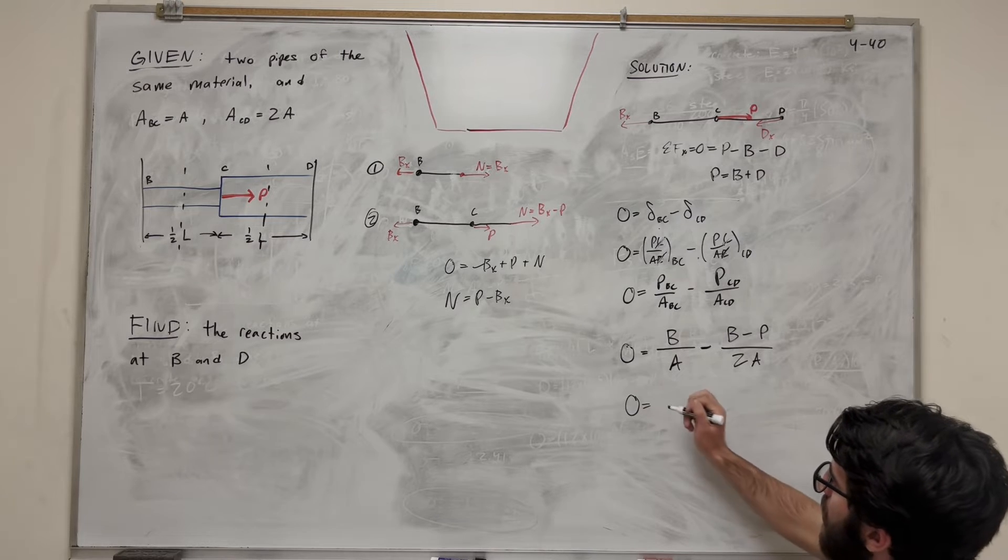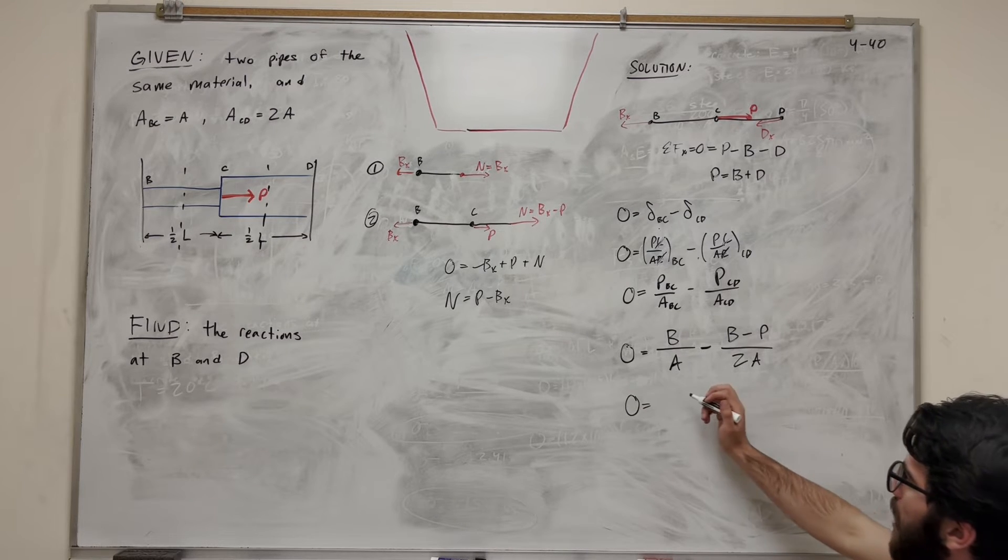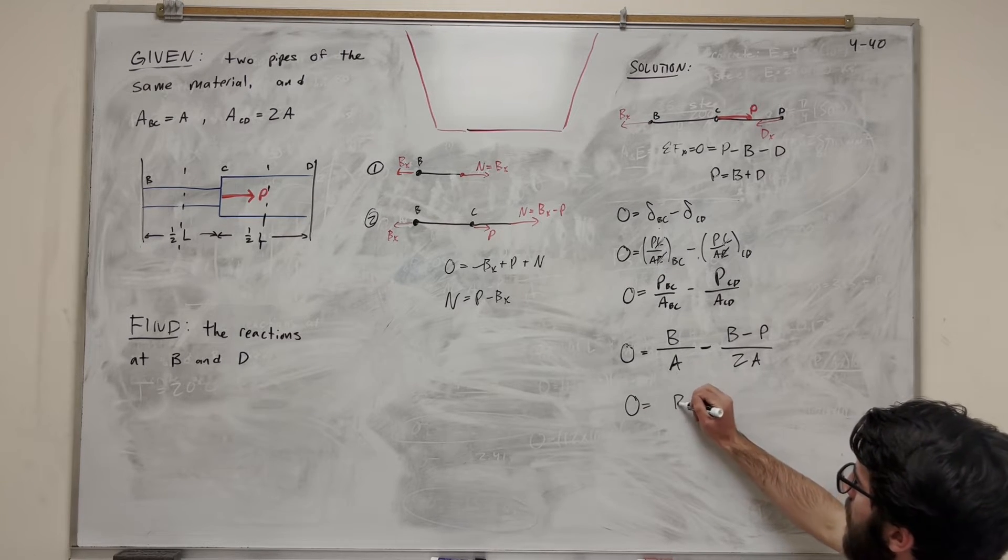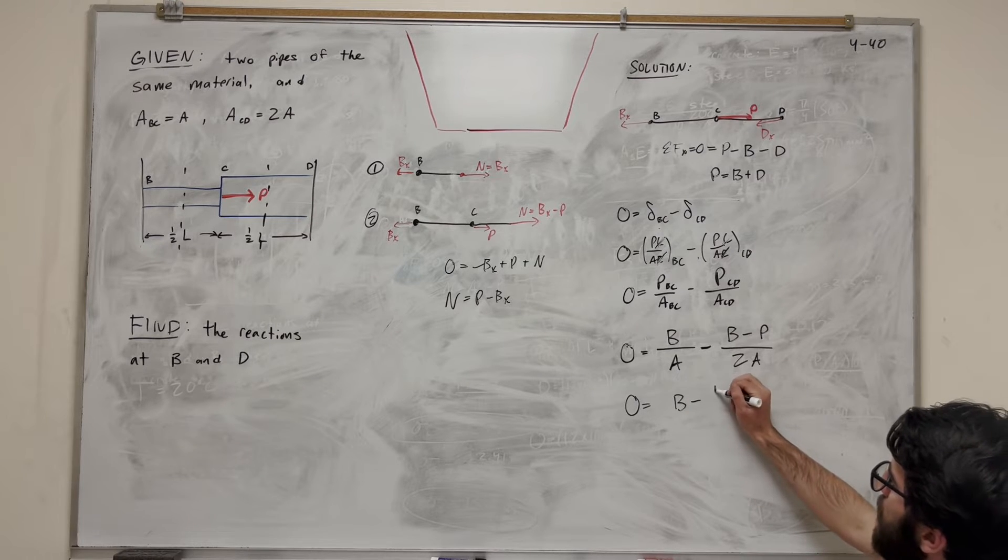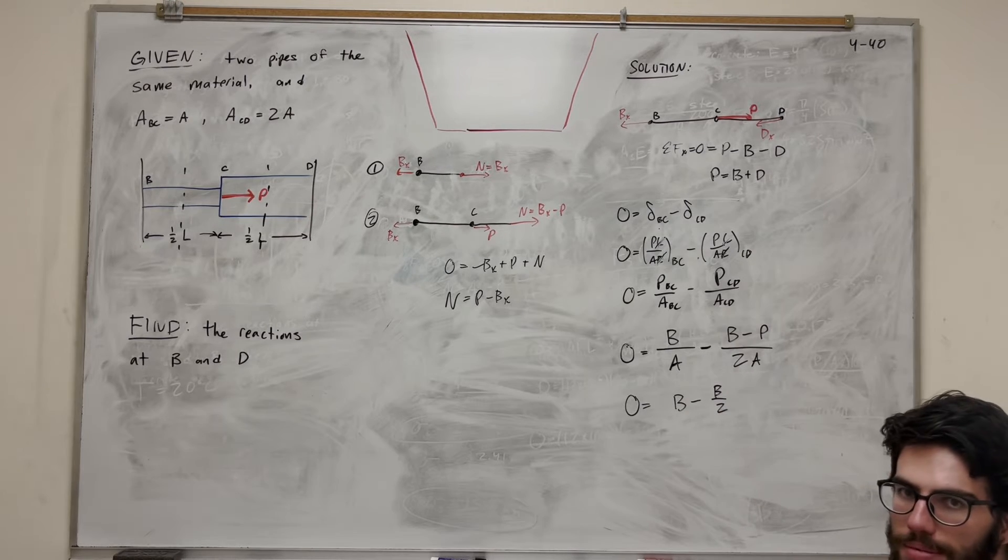So now it's just about simplifying this equation. Let's bring out. Let's see. We can divide by area. So then we're trying to get B minus B over 2.